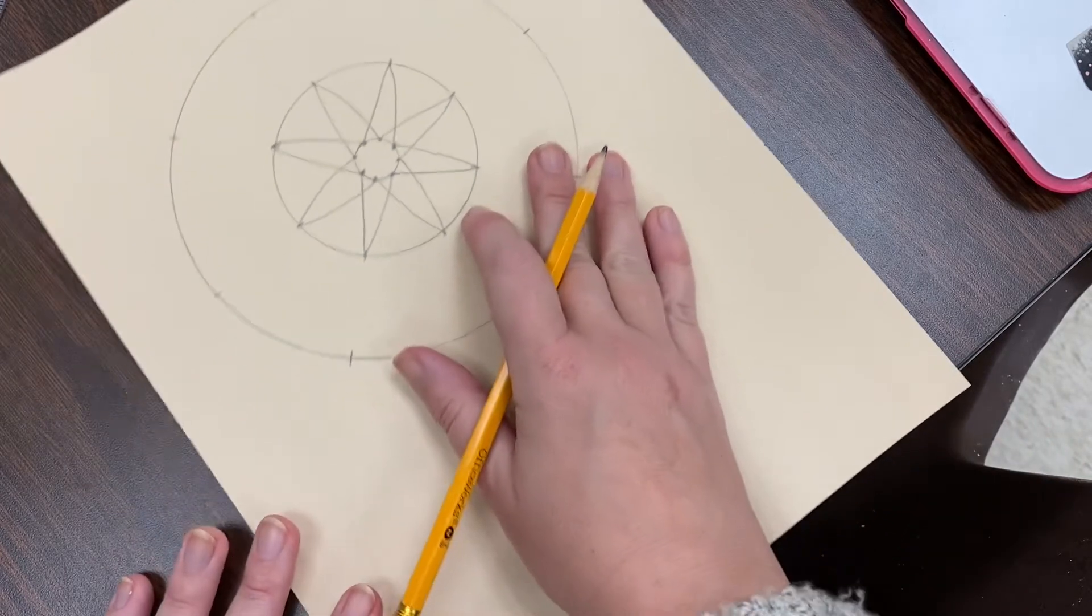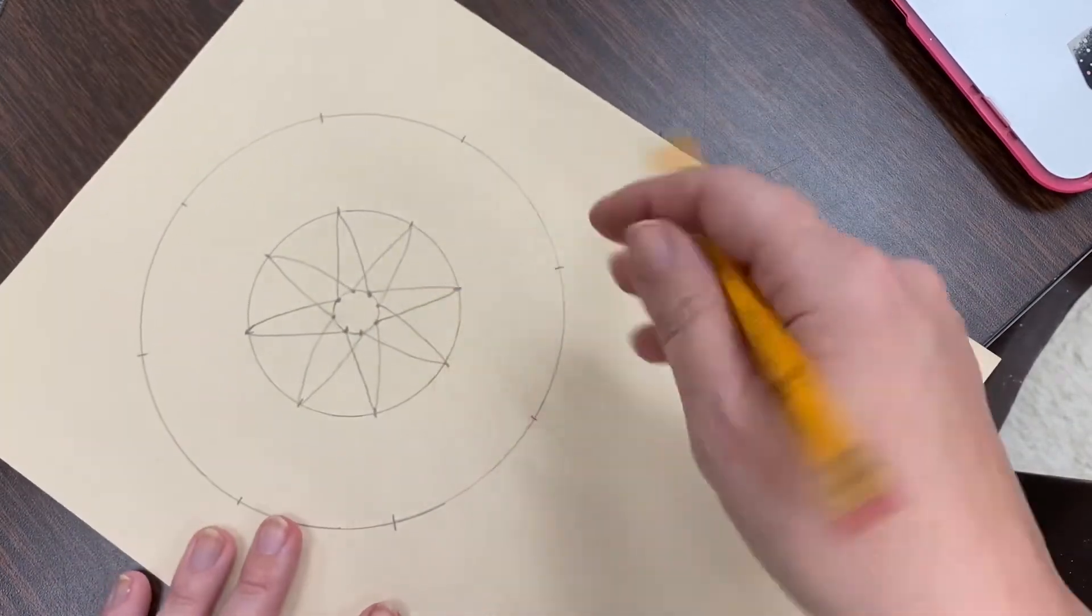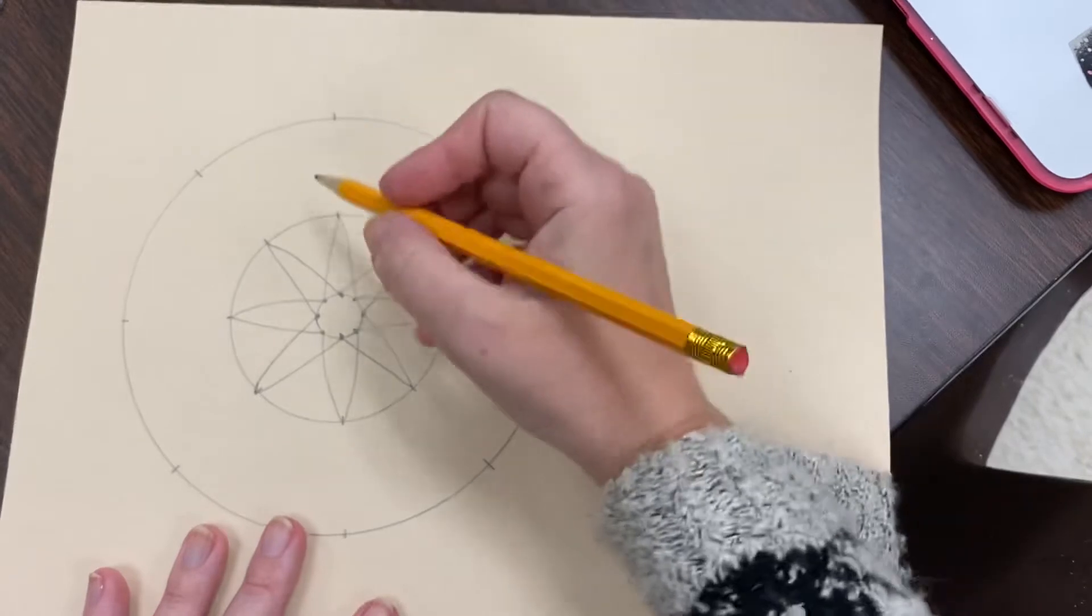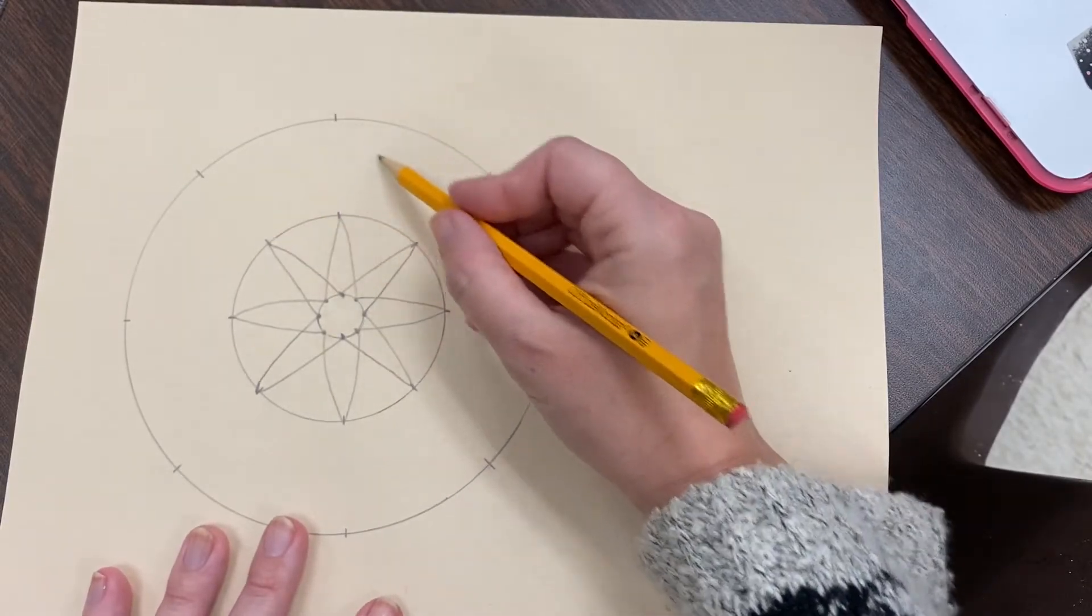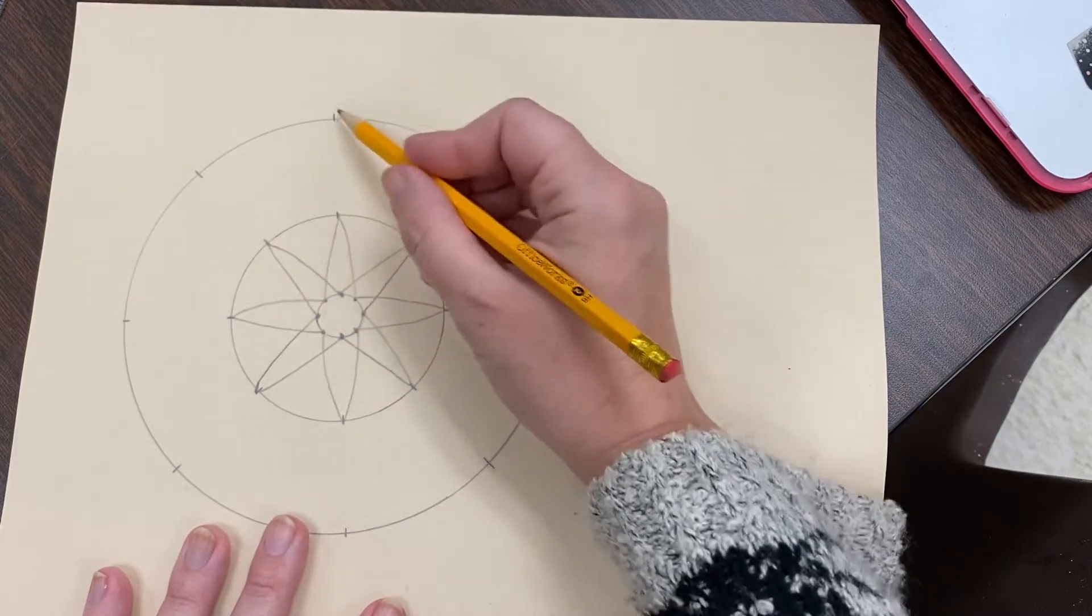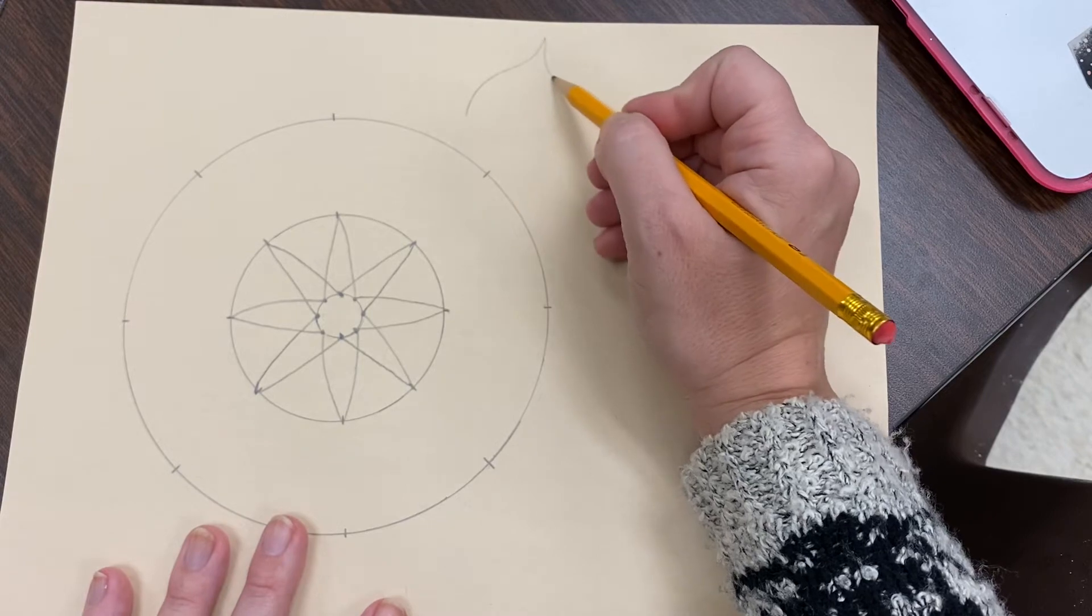Now, you can do the same thing with the outer wheel. What I would do on this outer wheel, because these are going to be really big, I would do sort of a curved or pointed petal.